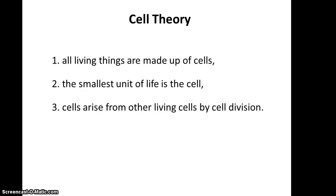Cell theory was developed in the 1800s, and it states that all living things are made up of cells. Therefore, something that does not have a cell is not a living thing. The smallest unit of life is the cell, so to be alive you have to have at least one cell. And cells arise from other living cells by cell division — no spontaneous generation here.